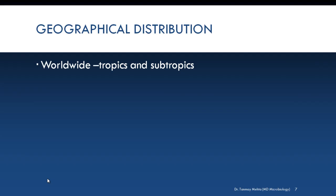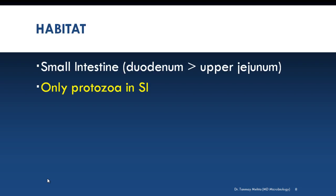Starting with geographical distribution: since Giardia is the most common protozoan parasite, it is found worldwide, but it is more common in areas with poor sanitation, especially in the tropics and subtropics. Visitors to such areas often develop traveler's diarrhea. Regarding habitat, Giardia lamblia lives in the duodenum and upper part of the jejunum, and it is actually the only protozoan parasite found in the lumen of the human small intestine.